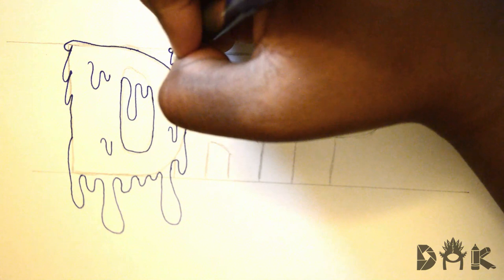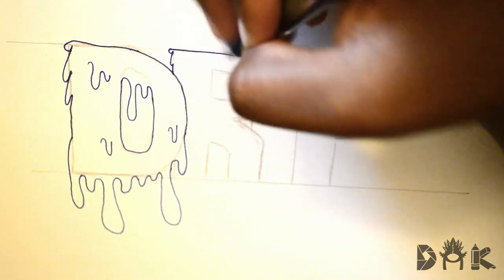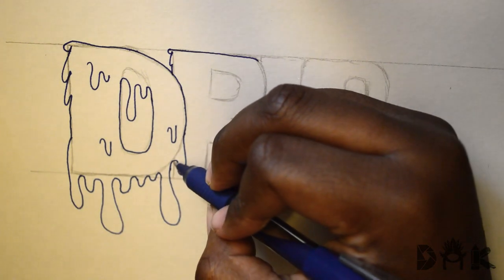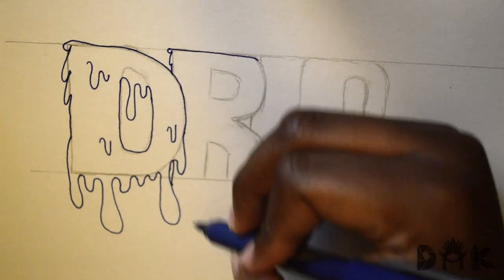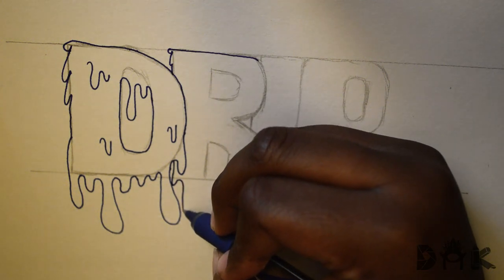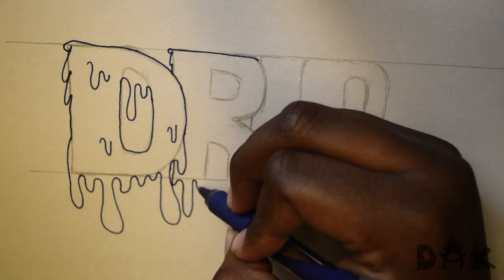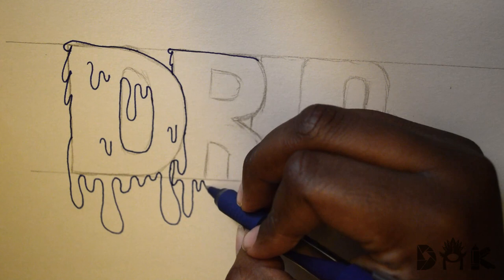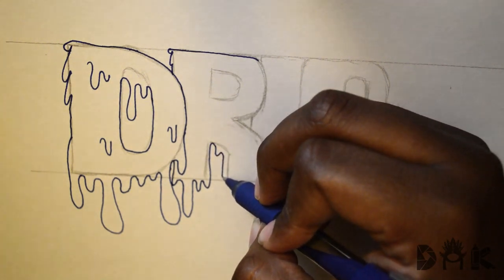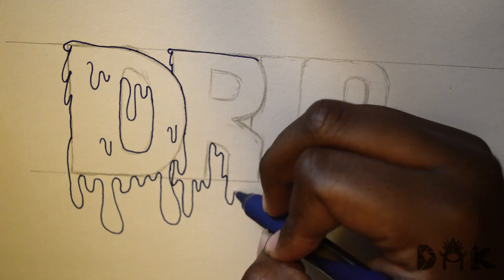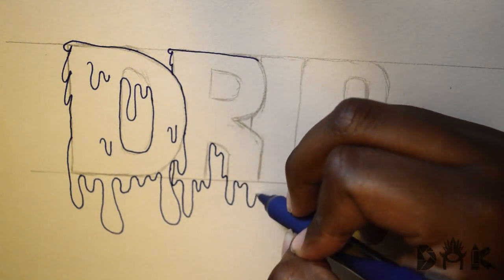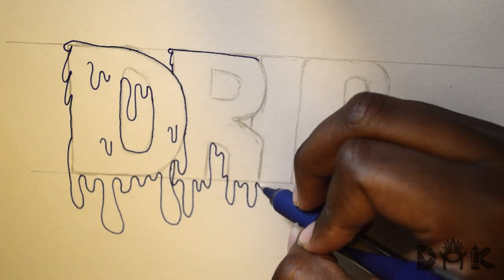Add that little hook at the top of all of the letters because it signifies it's dripping downwards. A good rule of thumb with the drips is if it's straight, leave it alone, and if it's horizontal, add the waves, add the drops.